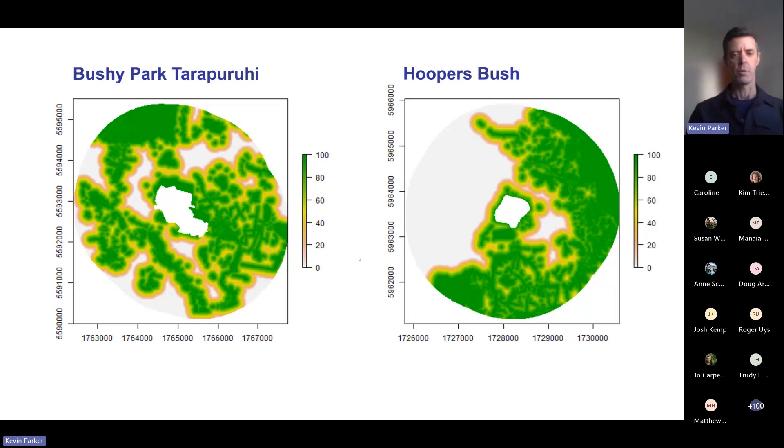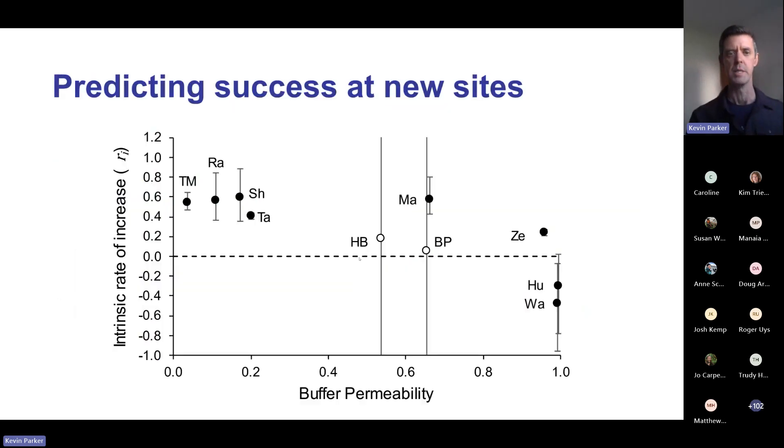For these data to be really useful, we want to use them to make predictions about what will happen at new release sites. We have two sites: Bushy Park Tarapuruhi where we released 50 birds in 2022, and another site called Hooper's Bush out of Otanui on the Kaipara Harbour, where we're planning to release 40 birds next year. If we look at the intrinsic rate of increase from each site, which has to be above zero for the population to increase, we can see the filled black circles are Tiri, Rangitoto, and Zealandia - sites that have established really well. Hunua and Waitakuri below zero have failed.